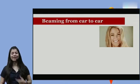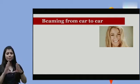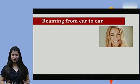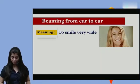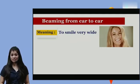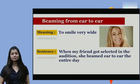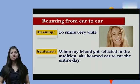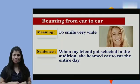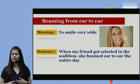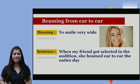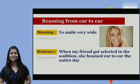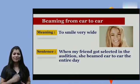Let's move on to the next one. Who do you see on the screen? A girl smiling wide. The next expression is 'beaming from ear to ear', which means to smile very wide. We can use this in a sentence like: 'When my friend got selected in the audition, she beamed ear to ear the entire day.' It means ki jab miri friend ka selection hua — she was very happy and smiling the whole day — so I can say she is beaming from ear to ear.